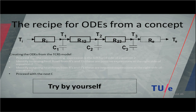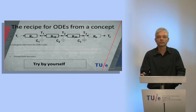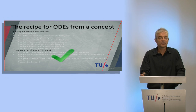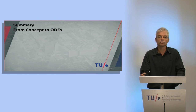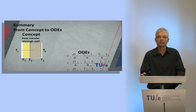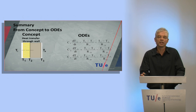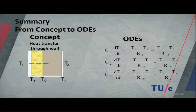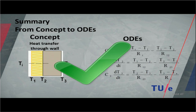I can proceed with the third equation, but that's homework for you to try yourself. This completes all parts of the recipe. In summary: we started with a concept — brick, insulation material, and temperatures — and what we ended with is a mathematical model in the form of ordinary differential equations, which you can derive by yourself.